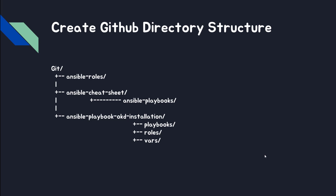We will create git as the root directory and we will create ansible rules, ansible cheat sheet, and ansible playbook OKD installation. Those can be changed. However, the main name — I'm going to use this structure.